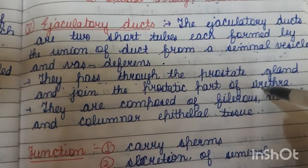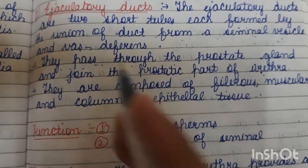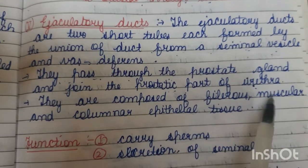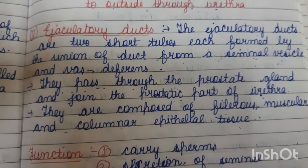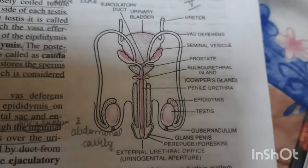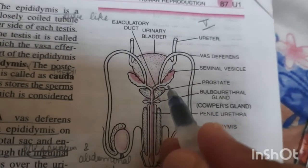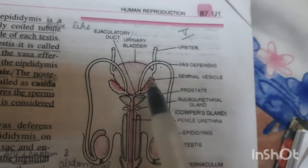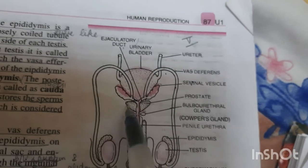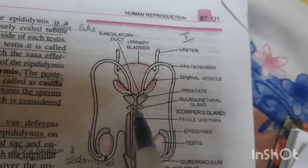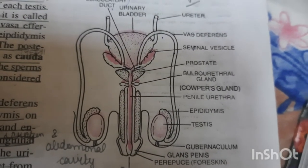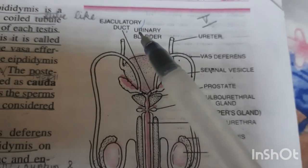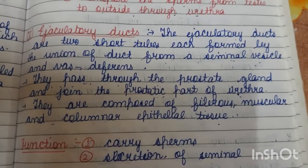The urethra has three parts: prostatic, membranous, and penile urethra. The ejaculatory ducts are composed of fibrous, muscular, and columnar epithelial tissue. This diagram represents the ejaculatory ducts — the two small tubes representing the union of the vasa deferentia and seminal vesicle — which enter the prostatic part of the urethra.